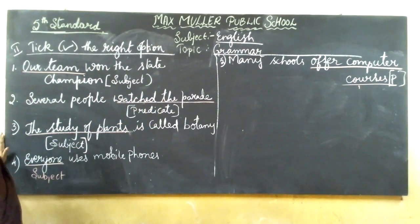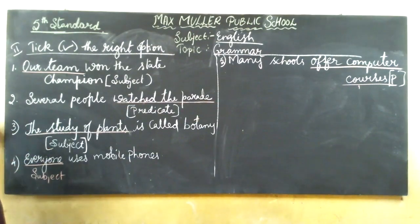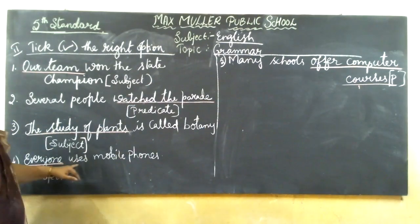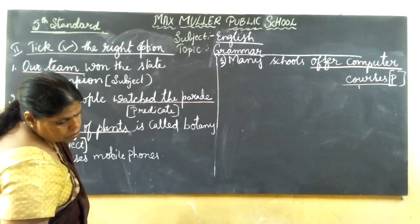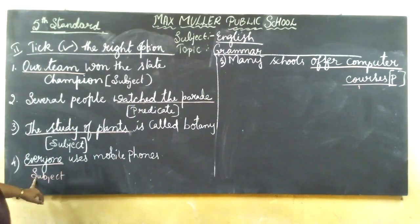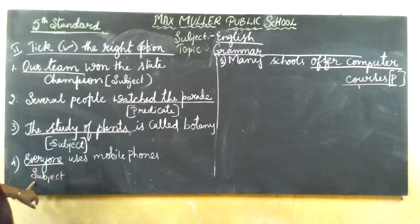'The study of plant is called botany.' Deval, what is 'the study of plant' — whether it is a subject or predicate? It is a subject. We are talking about the study of plant; what it is called — it is called botany. 'Everyone uses mobile phones.' So, everyone becomes the subject. They are given the underlined word in block letters in a box — you have to tick it whether it is subject or predicate. It is subject.